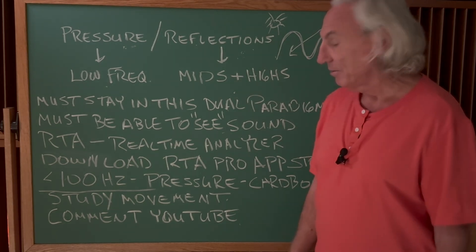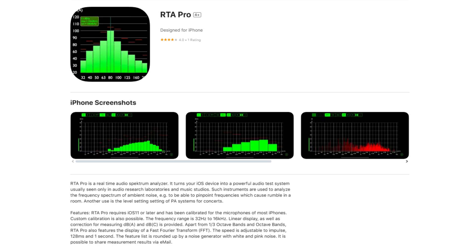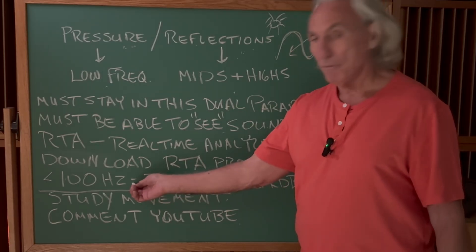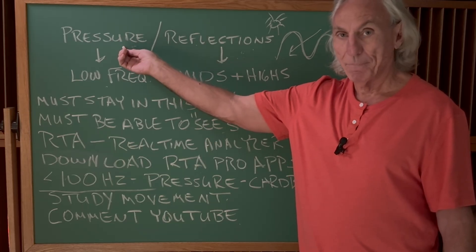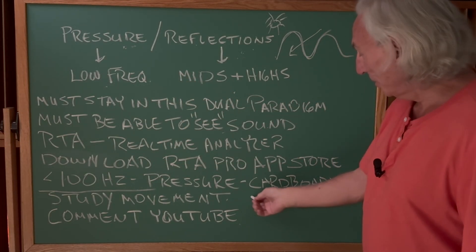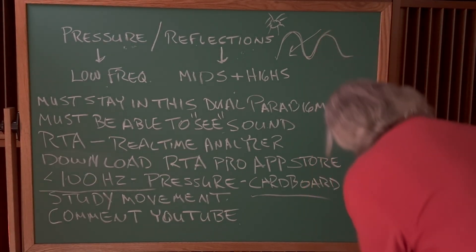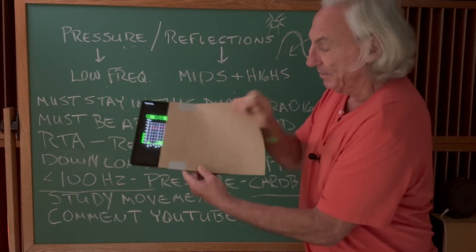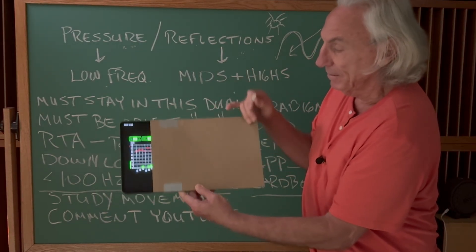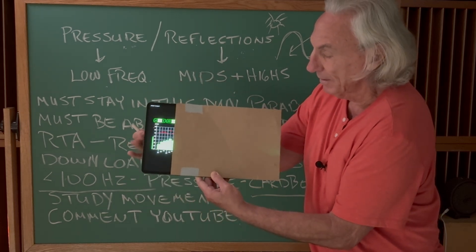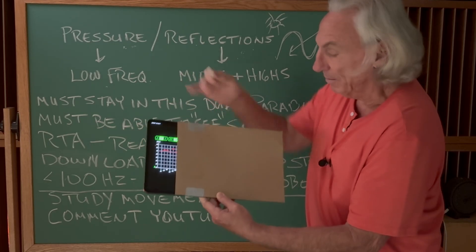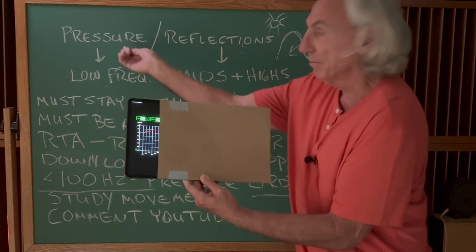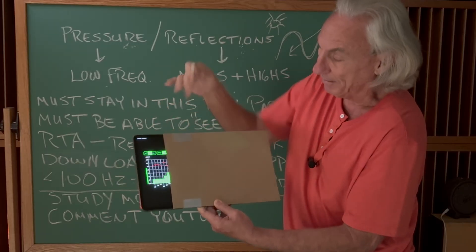Go ahead and download the app from the app store. Here's a screenshot of what it looks like — RTA Pro, it's all green. We're going to focus on everything below 100 hertz, because that's going to be low frequency pressure. I want you to take a piece of cardboard — I already did it — just place a piece of cardboard over your RTA and start at 100. Block off everything above, so you're just viewing everything below 100. That's what we want. We're going to study the movement, and I want you to get confused up in the higher range because that's reflection — we're focused on pressure here.